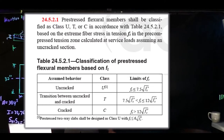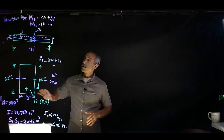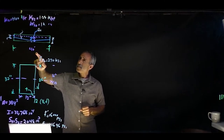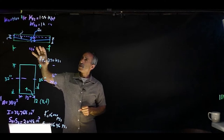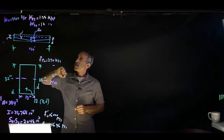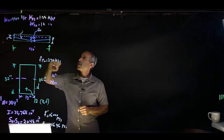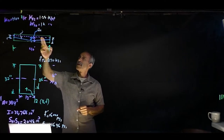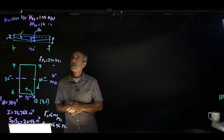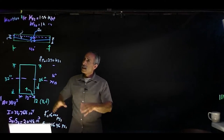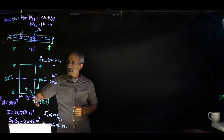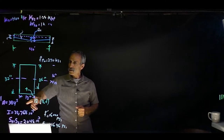So what we have here is this example. We have a simply supported 40-foot span beam with a uniform distributed load. The weight of the beam is about 0.4 kips per foot (400 pounds), the superimposed dead load is 1 kip per foot, and the live load is 1.25 kips per foot. The cross section of this beam is 32 inches by 12 inches.